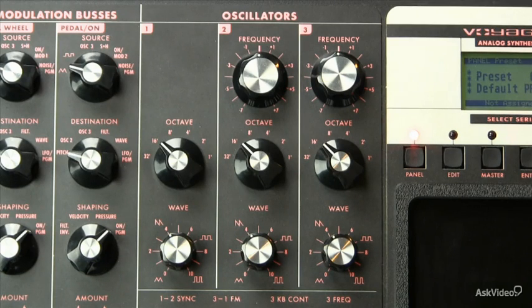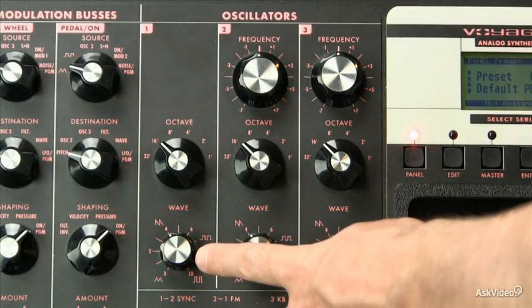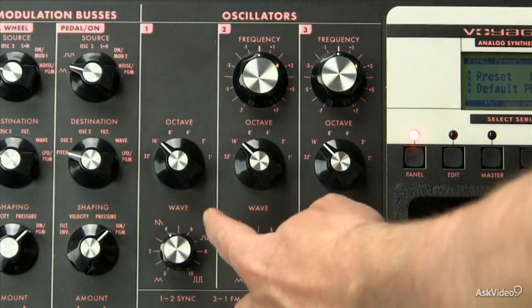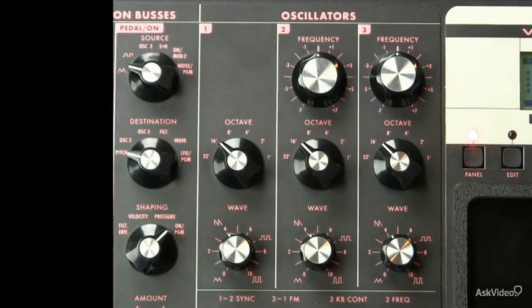For example, what we have here on the Moog Voyager, you'll see that there is a knob here, but there are no settings. There's only a gradient between various waveforms. Let me show you what that looks like.